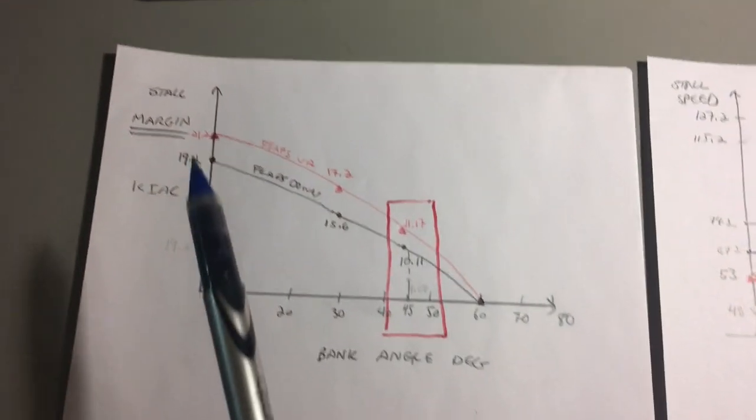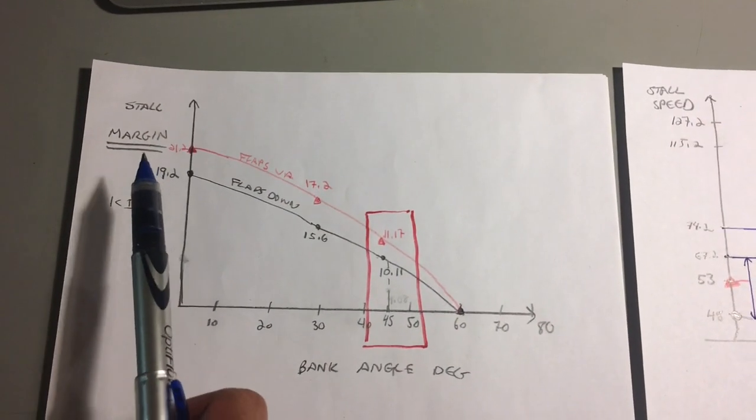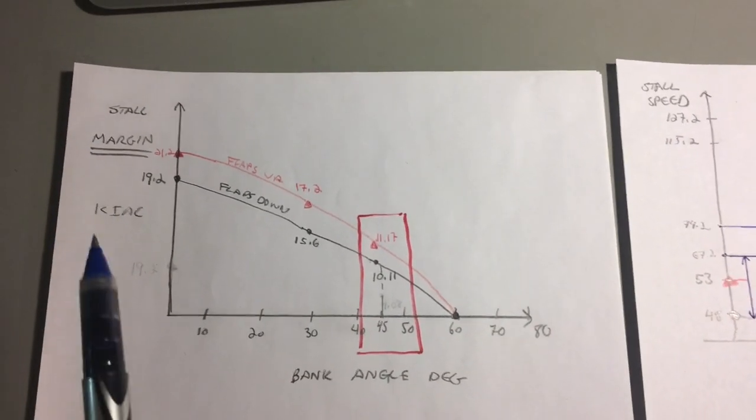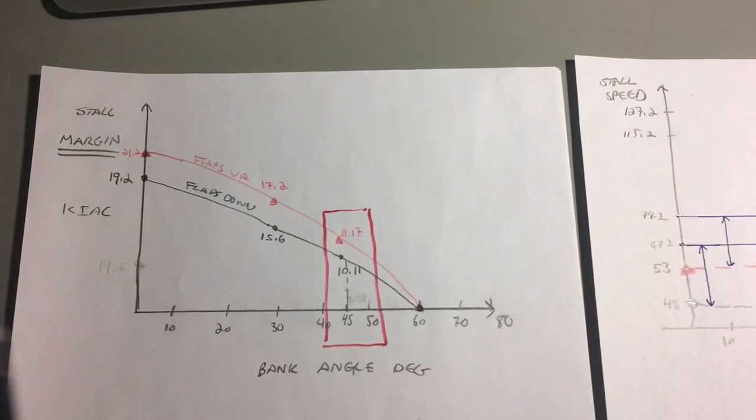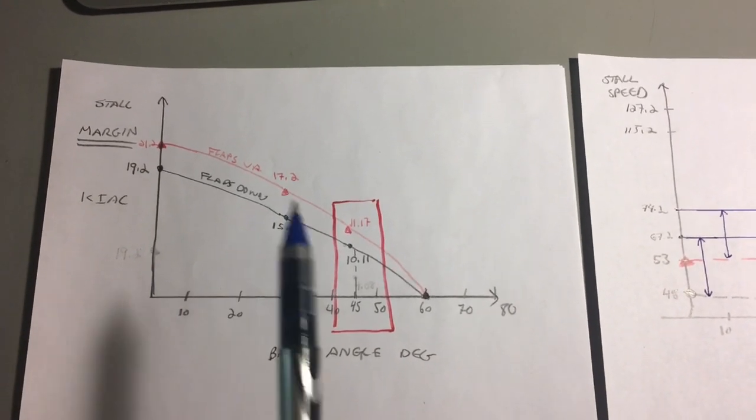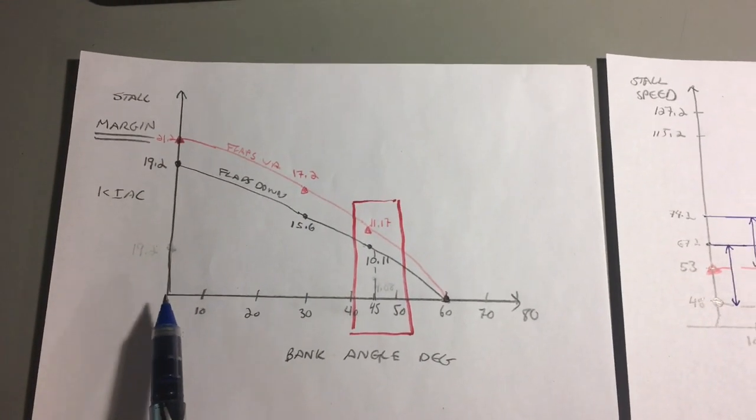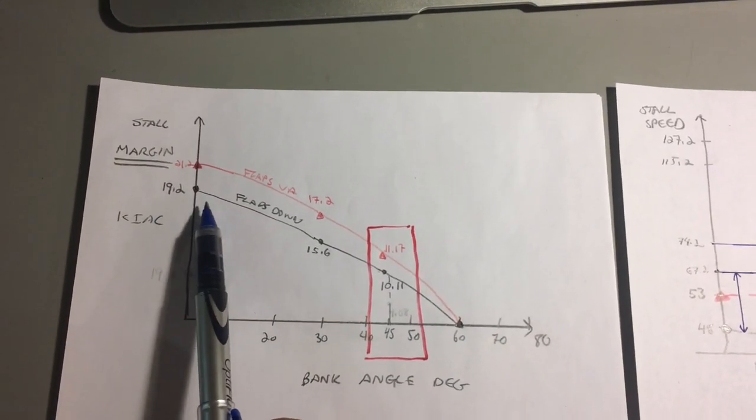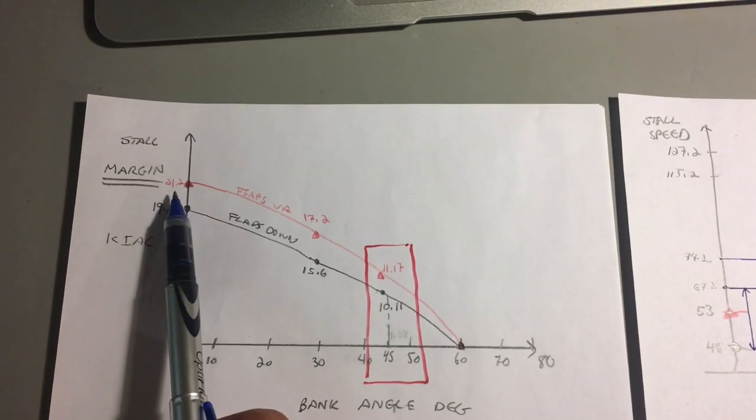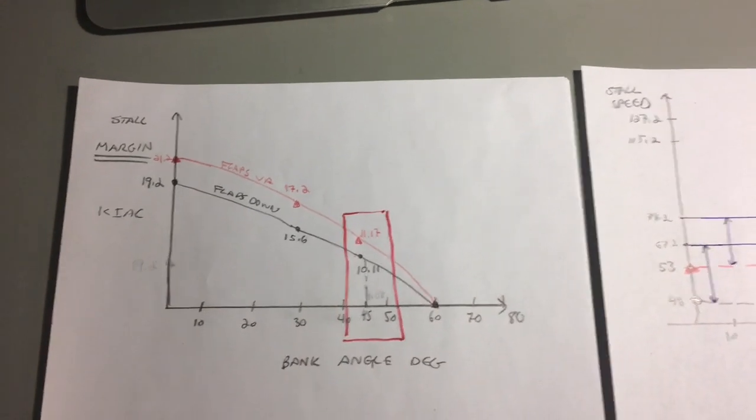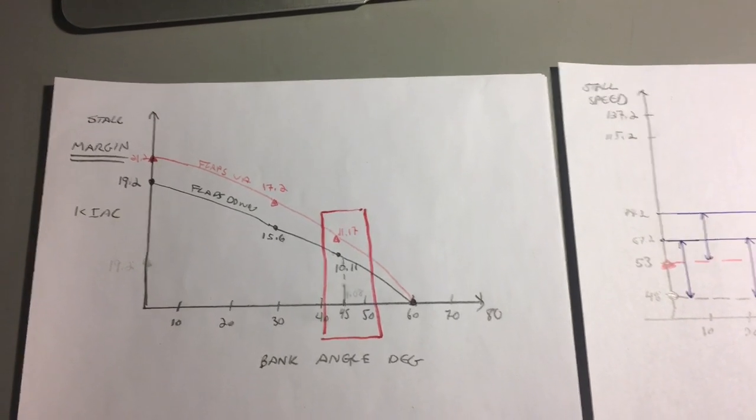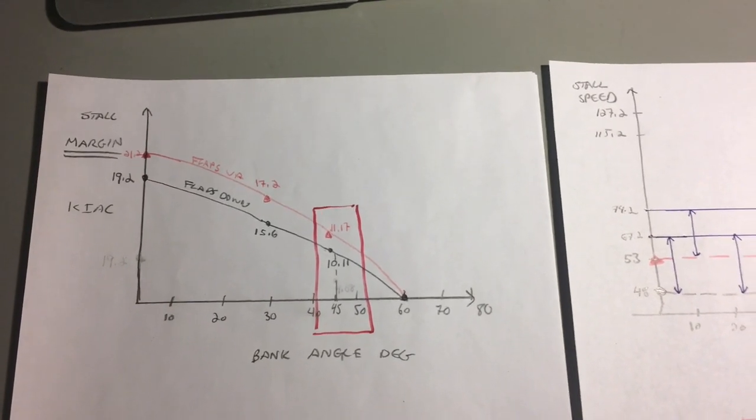We can see here the x-axis is again the bank angle in degrees, this time the y-axis is the stall margin. What this shows us is that if we fly the approach speed the entire time in the pattern at 0 degrees bank angle we have 19.2 knots for the flaps down and 21.2 knots that we could get slow relative to the approach speed before we stall. That's a tremendous buffer.